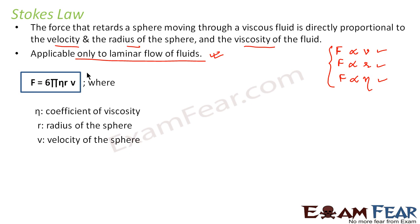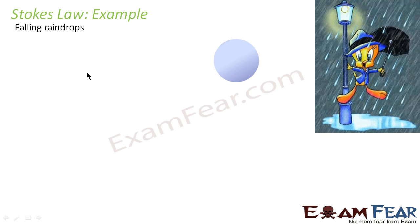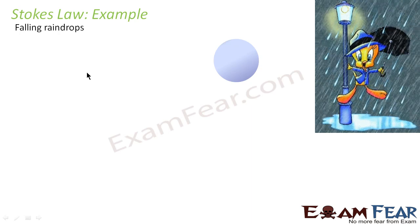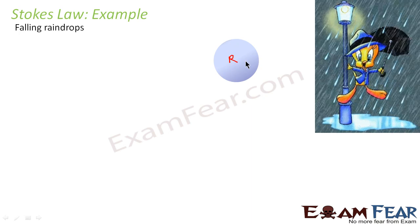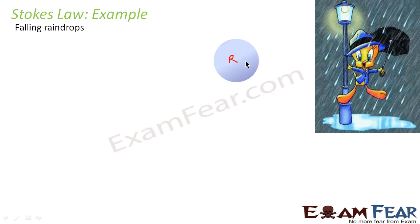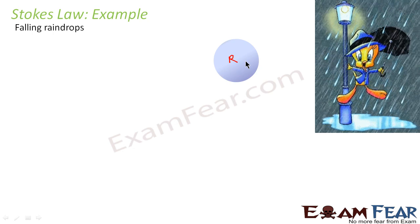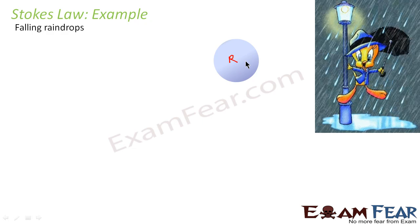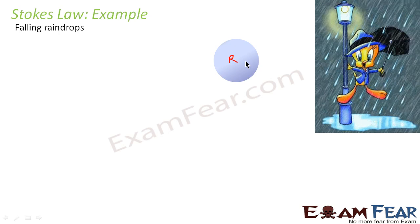Now we will take an example to illustrate Stokes' Law — the example of falling raindrops. All of us have experienced rain. Concentrate on a single raindrop. When a raindrop falls through the air, air is a fluid with some viscosity of its own, so air is a viscous medium. Since the raindrop is falling through a viscous medium, there will be some force which will try to stop its motion.